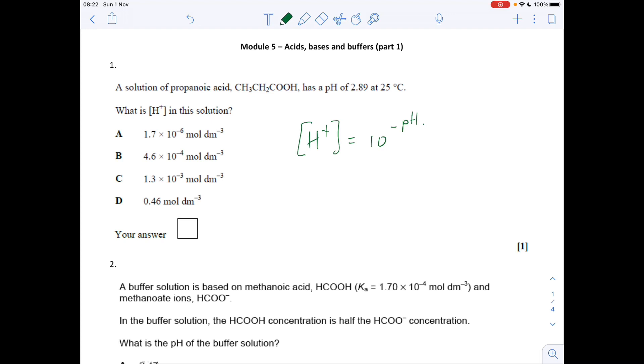Okay, so the first one: we're given the pH of the propanoic acid and we've got to calculate the H+ concentration. It's all linked by this equation here, so the hydrogen ion concentration is 10 to the minus pH. So it's 10 to the minus 2.89 and it comes out as option C as your answer.